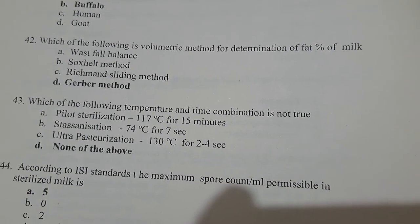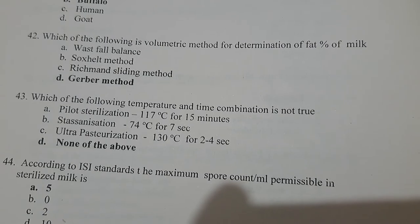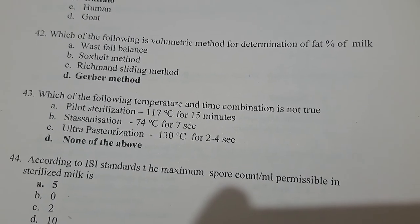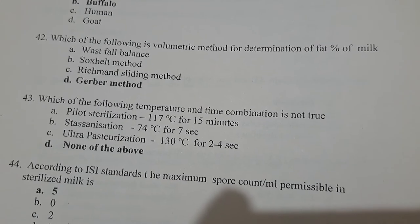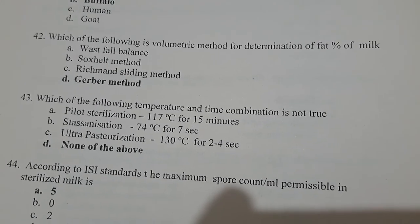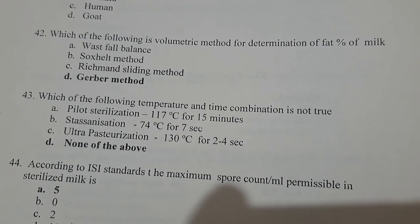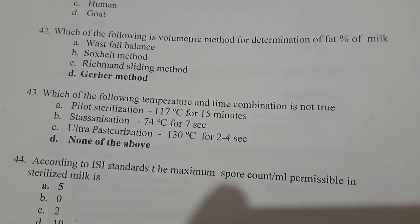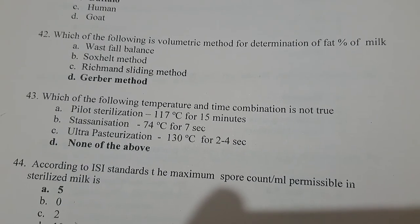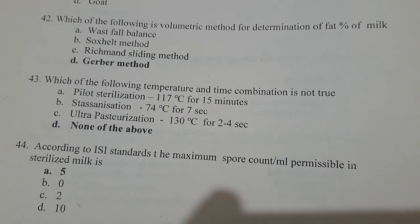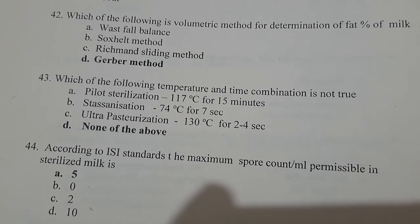The combinations given: in-bottle sterilization at 170°C for 15 minutes; thermization at 70°C for 7 seconds; ultra-pasteurization at 130°C for 2 to 4 seconds. The answer is none of the above — all stated combinations are incorrect.